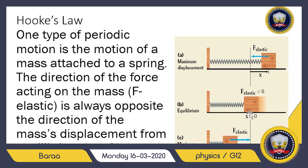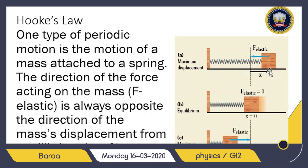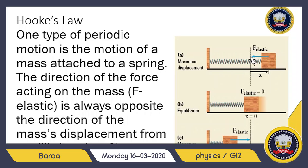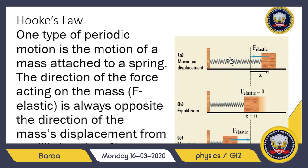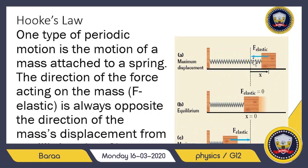The mass continues to position C where kinetic energy is zero and elastic potential energy is maximum again. Back at equilibrium, kinetic energy is maximum and elastic potential energy is zero. This cycle repeats: from position A to equilibrium, to maximum negative displacement, back to equilibrium, and to maximum positive displacement, and so on.